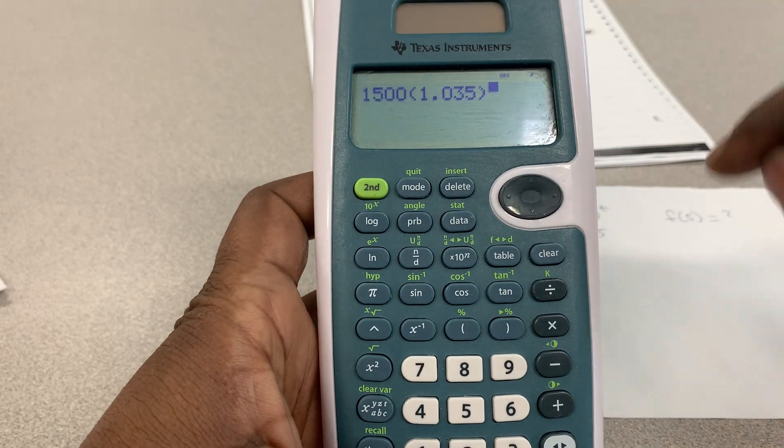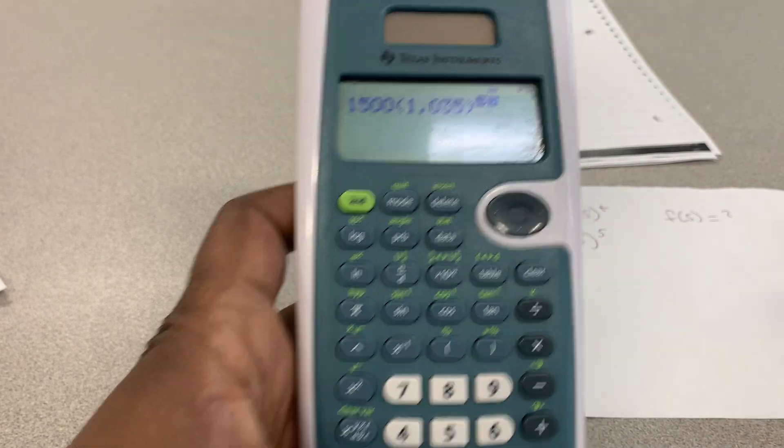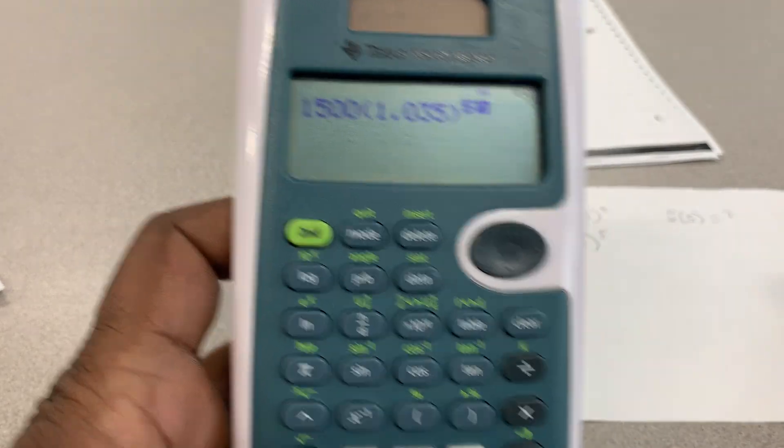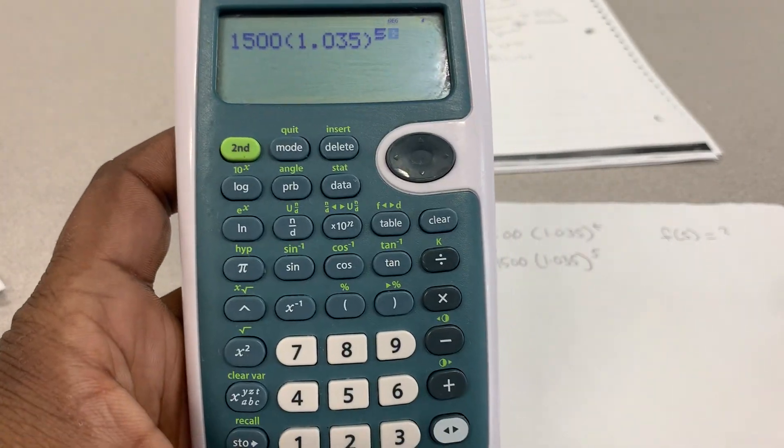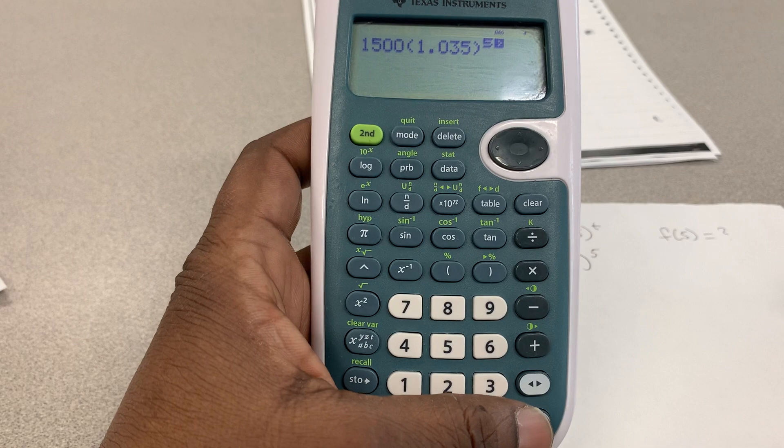Once I press that V, all I got to do is put 5. Now, you see how the problem on the calculator looks just like the problem on the paper? That's what you have to do. And then you're going to press Enter.